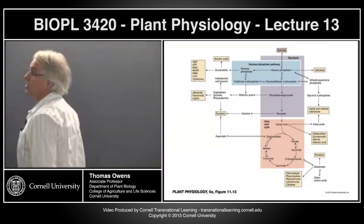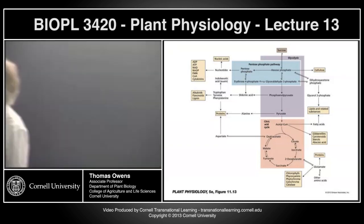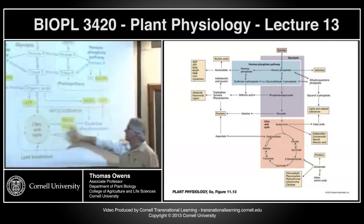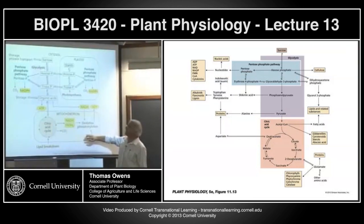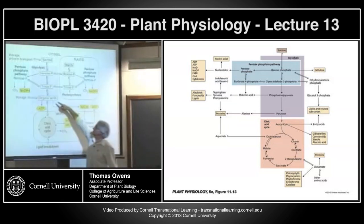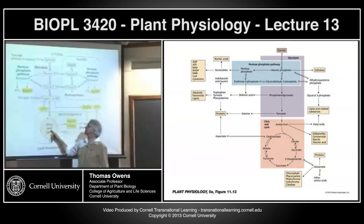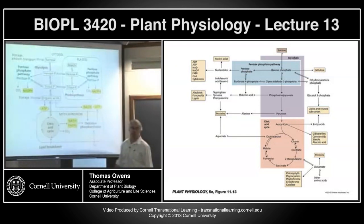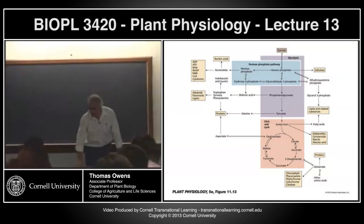Glycolysis is happening in the cytoplasm, the citric acid cycle in the mitochondria, and electron transport in the mitochondria. There's got to be coupling between organic acids produced by glycolysis going into the citric acid cycle. NADH is produced by glycolysis and by the citric acid cycle, and both go into electron transport. That's the first level you should really be thinking about.